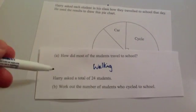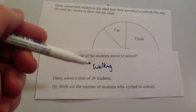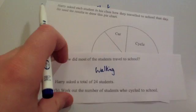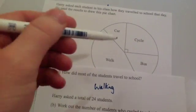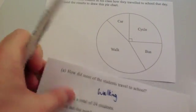Here we go. Harry asks a total of 24 students. Work out the number of students who cycled to school. So if you look at the cycle section, you've got a quarter of a circle. It's a quarter of the pie chart. That means a quarter of the students cycled.